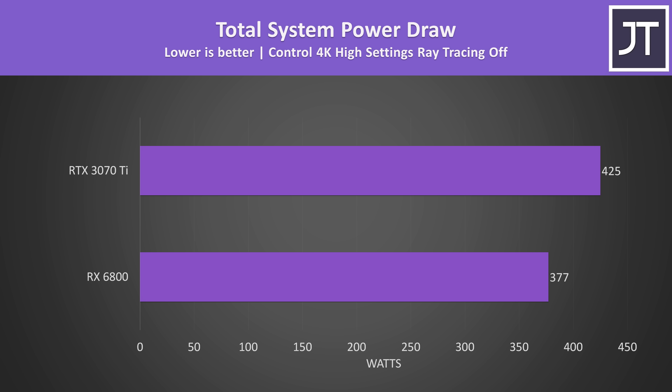In terms of power draw, the 3070 Ti system was drawing 13% more power from the wall in Control at 4K. Although the 3070 Ti was winning here with a 5% higher average frame rate, that's only around a 2 FPS lead, so the 3070 Ti appears to be using more power just to do a little better, at least in this particular game.